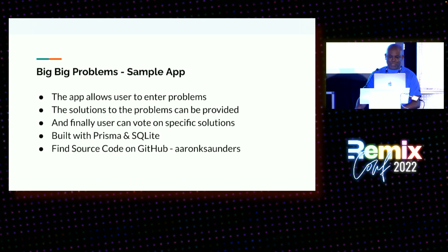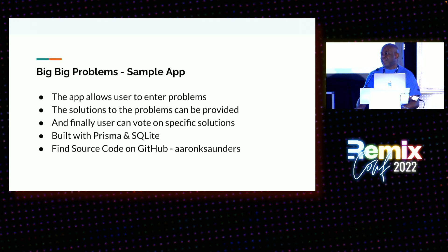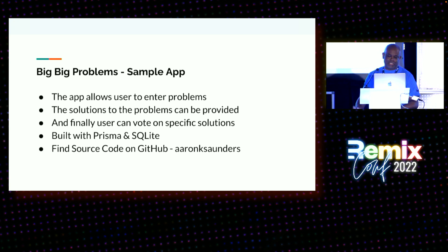My sample app called Big Big Problems basically allows you to enter problems. The problems have a relationship with solutions, and users can vote on the solutions. The full-blown app — source code will be posted — is built with Prisma, SQLite, Semantic UI, just the CSS, and of course Remix. The source code will be found on GitHub.